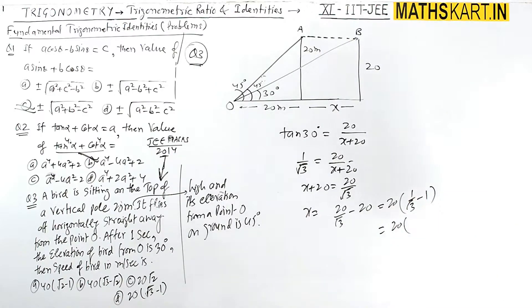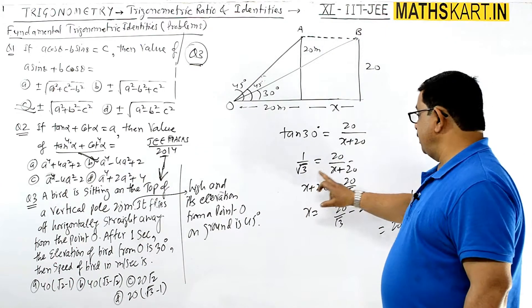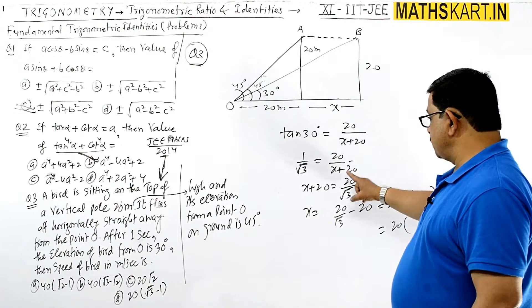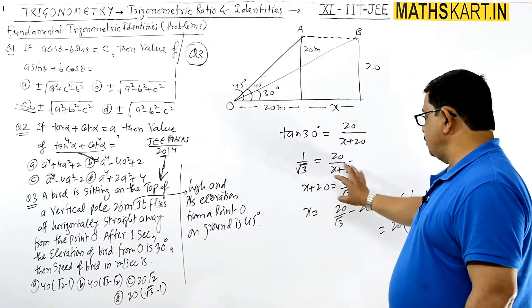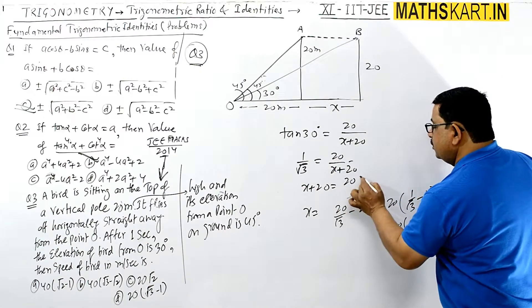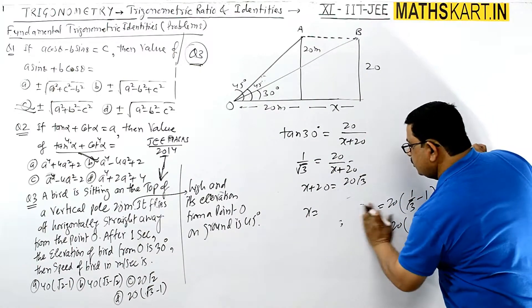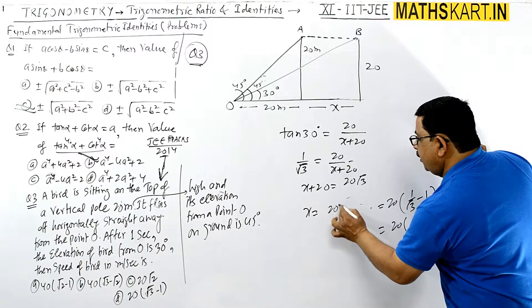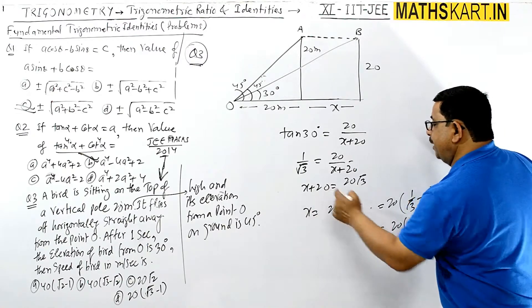Jis tarah se answer likha hai, toh usko aap likh sakte hain. Meter per second speed hai iski. So 20 tan - 1 by root 3 barabar likha hai. X plus 20 equals to 20 root 3. This is 20 root 3. Now it is 20 root 3 minus 20.